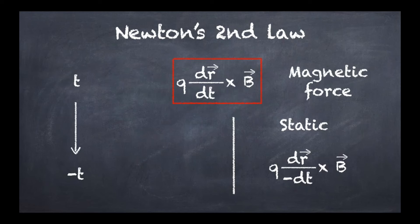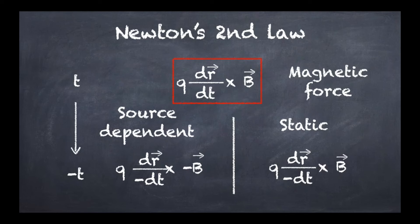There's another scenario to consider: the source-dependent magnetic field. In this view, a magnetic field doesn't come from nowhere but emerges from an electrical current. What that means is that if we invert time, the current is going to go in the opposite direction, and so will the magnetic field. As a result, the magnetic field gets a minus sign upon time reversal. So in the end we've got q dr over minus dt, cross product with minus B.